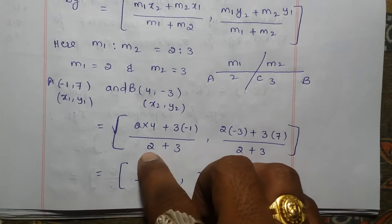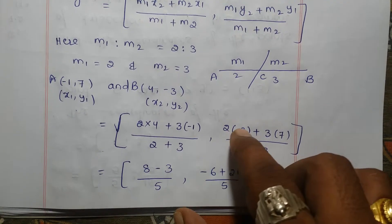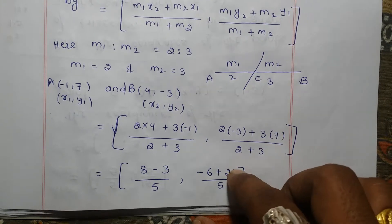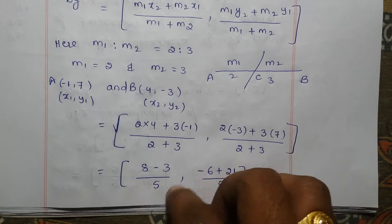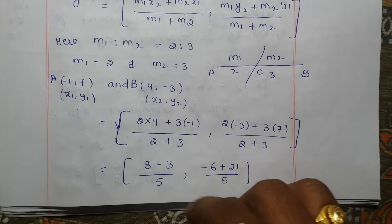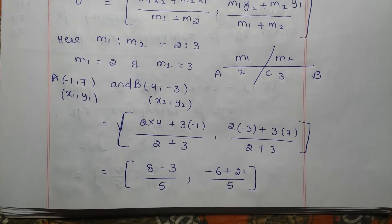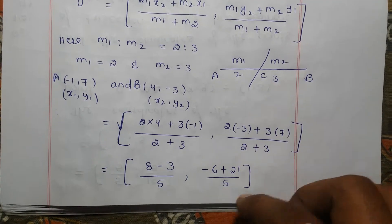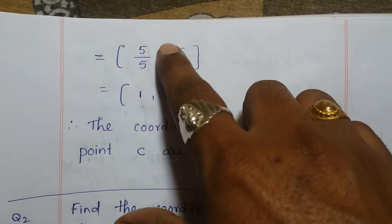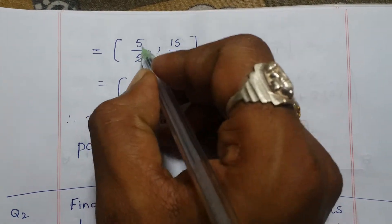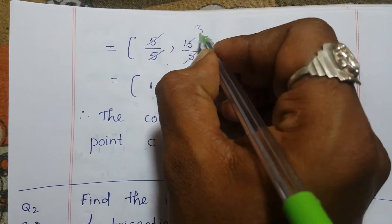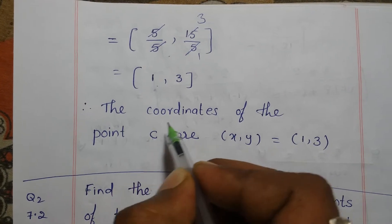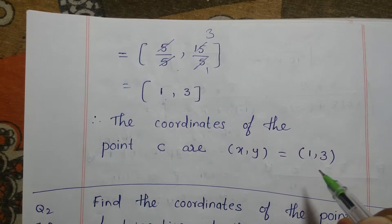So here: plus into minus is minus. 2 into 4 is 8, 3 into −1 is −3, divided by 5. Plus into plus is plus, 3 into 7 is 21, divided by 2 + 3 which is 5. So here 8 minus 3 is 5, this is 5 by 5. The difference of 21 and 6 is 15, this is 15 by 5. So this is 5 by 5 comma 15 by 5. We can cancel: 5 by 5 is 1, 15 by 5 is 3. Therefore the required coordinates are (1, 3). Therefore the coordinates of point C are (x, y) = (1, 3).